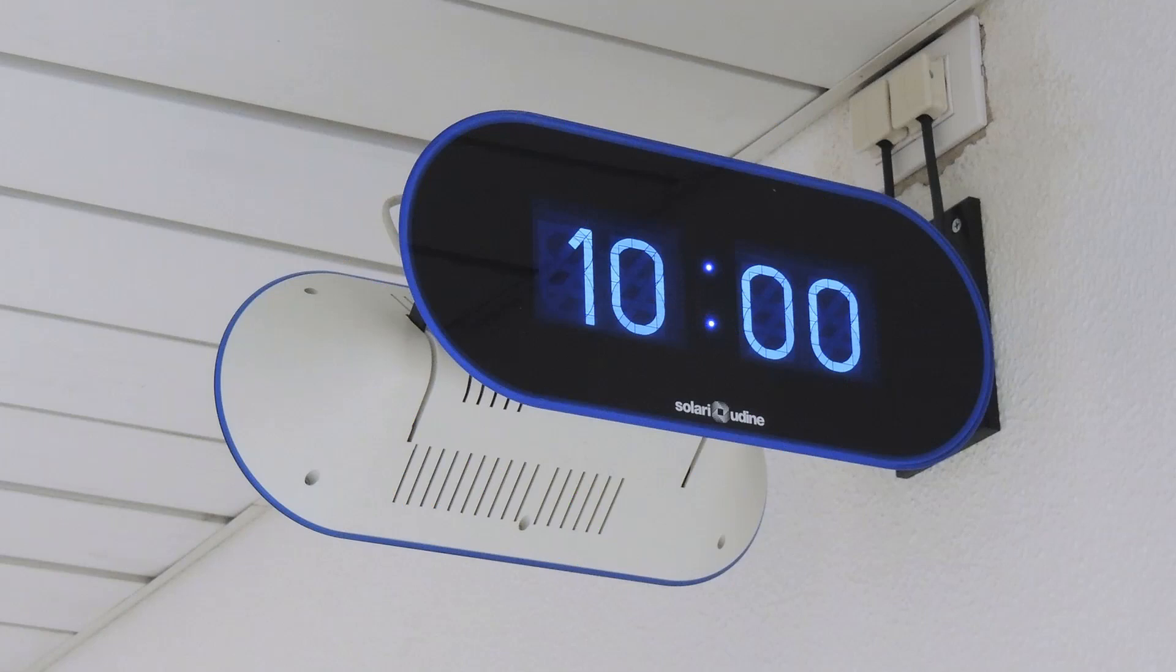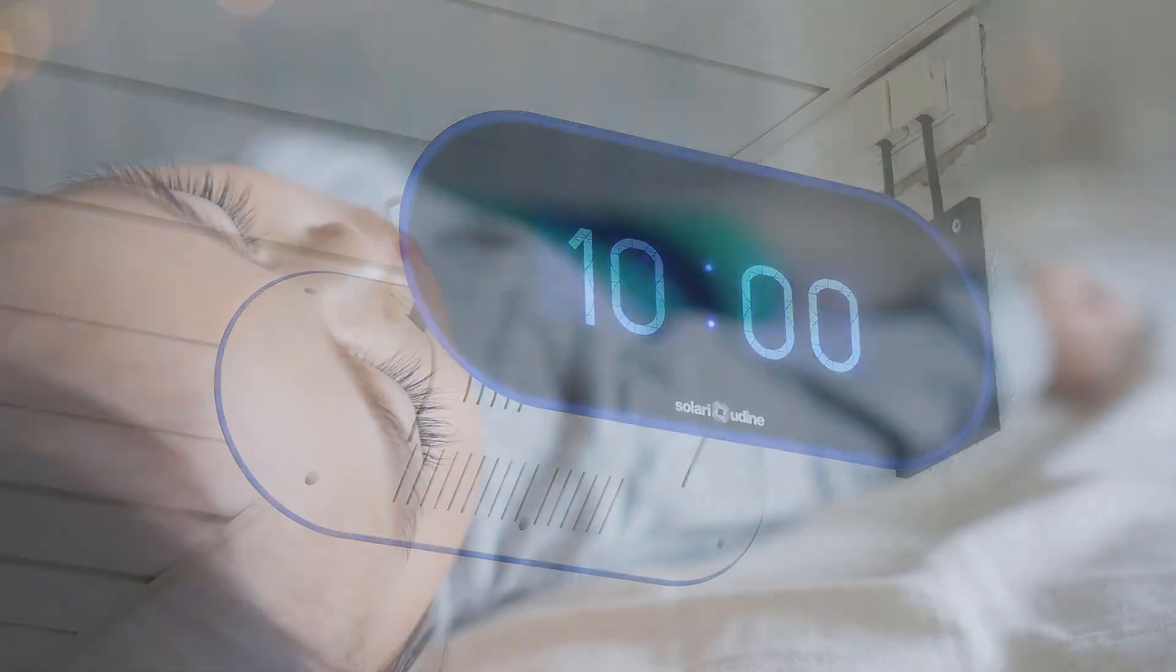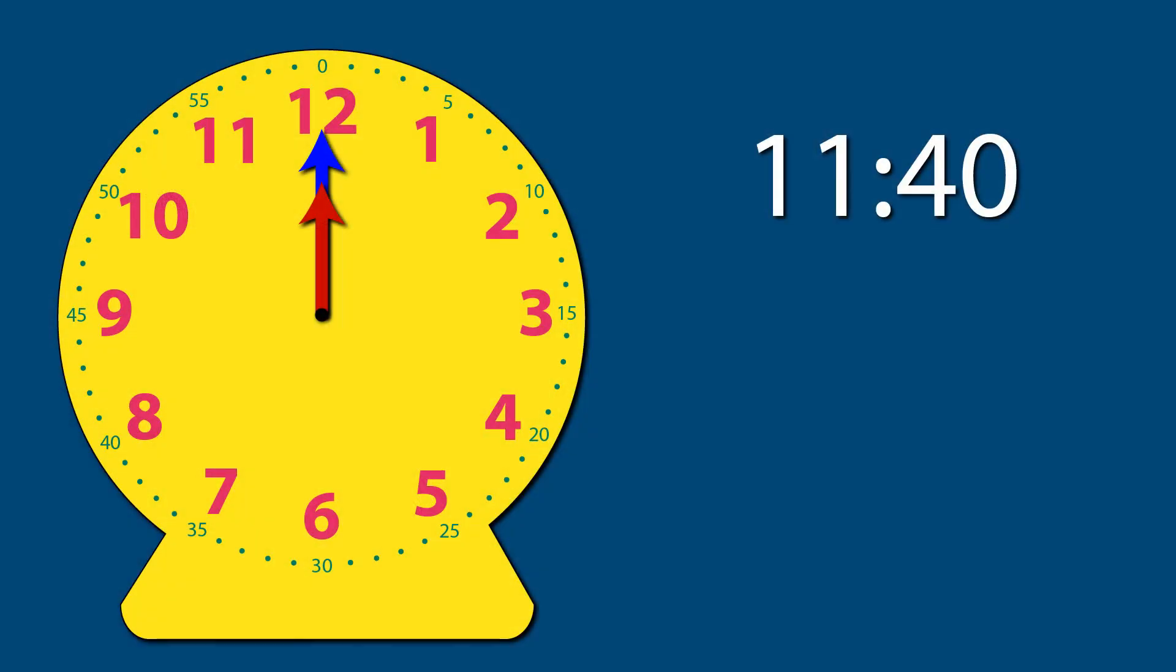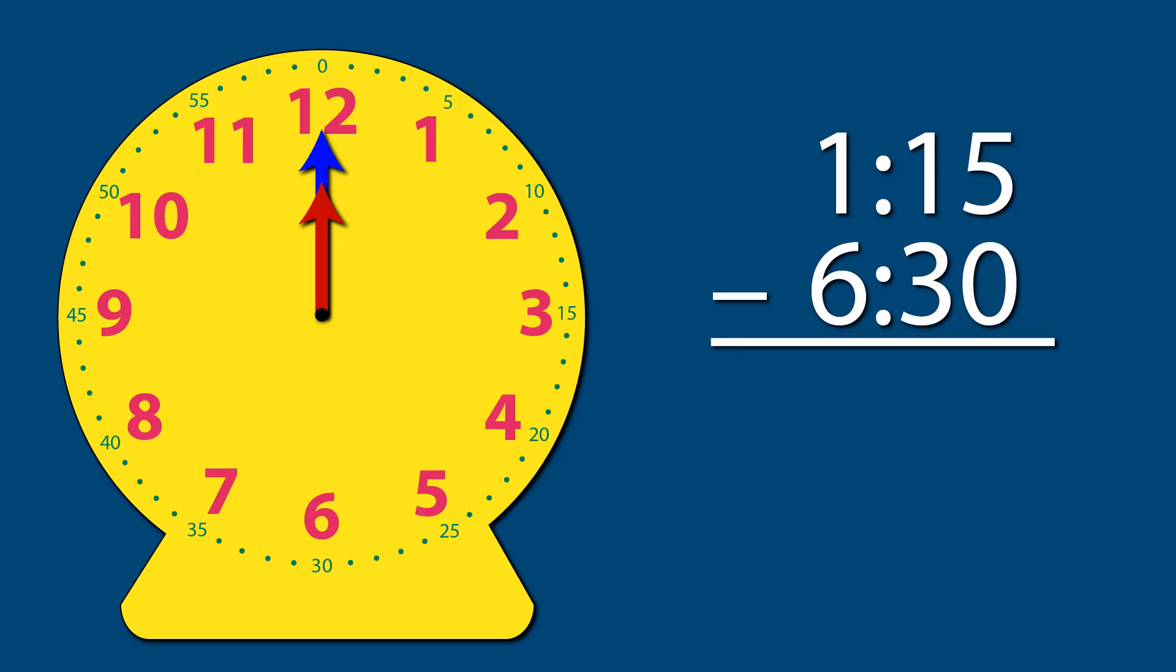So, in summary, time tells you what part of the day it is. And people make plans based on the time. To find out what time it will be several hours and minutes in the future, you can add the number of hours to the current hour and the number of minutes to the current minute. To find out what time it was a few hours and minutes ago, simply subtract from the current time.